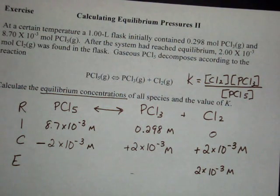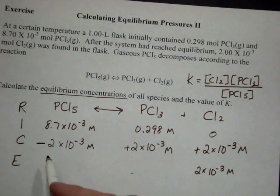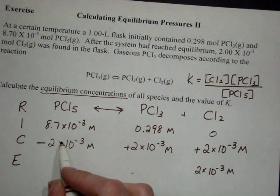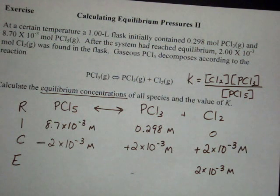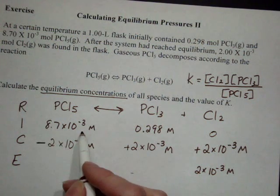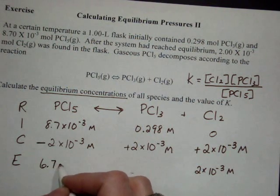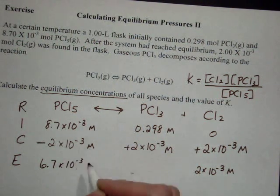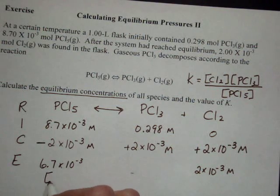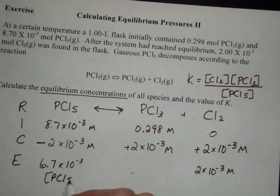To get my equilibrium values for concentrations, I'm just going to subtract or add as necessary. So 8.7 times 10 to the minus 3, minus 2 times 10 to the minus 3, I get 6.7 times 10 to the minus 3 molar. And that's my concentration for PCl5.